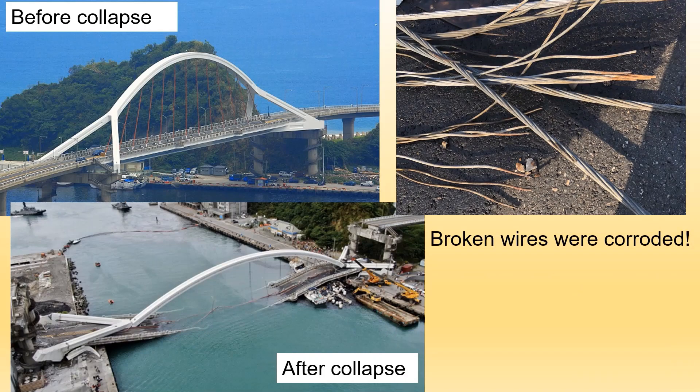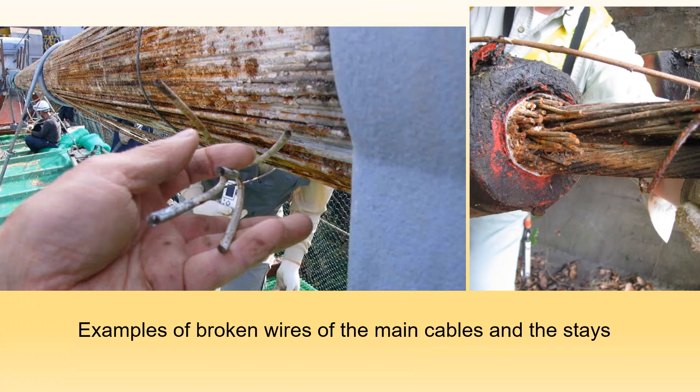It was found after the bridge collapsed that the hanger ropes were corroded. Lots of bridges suffer cable corrosion. These are examples of broken wires of the main cables and the stays. Don't ask me where I got these photos.